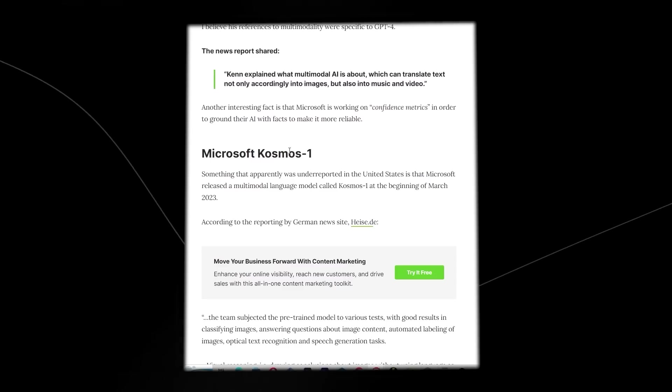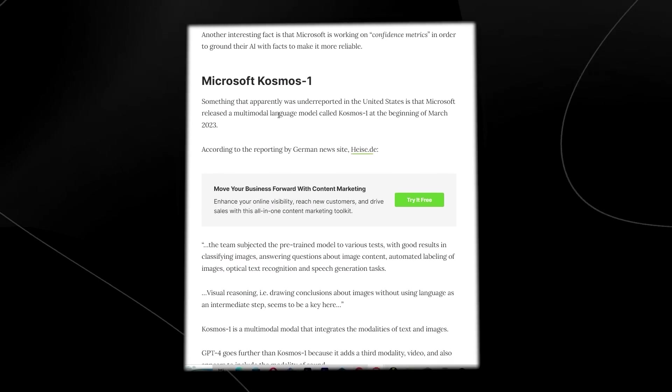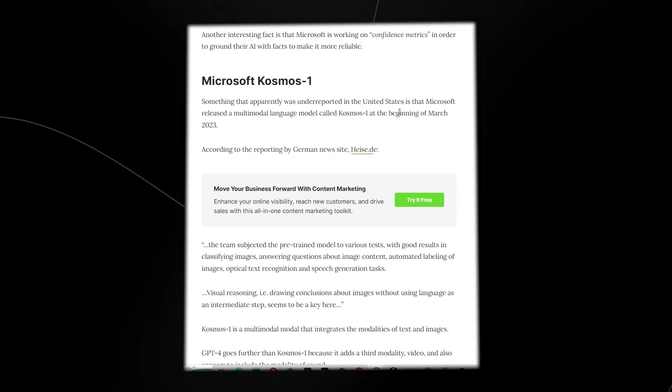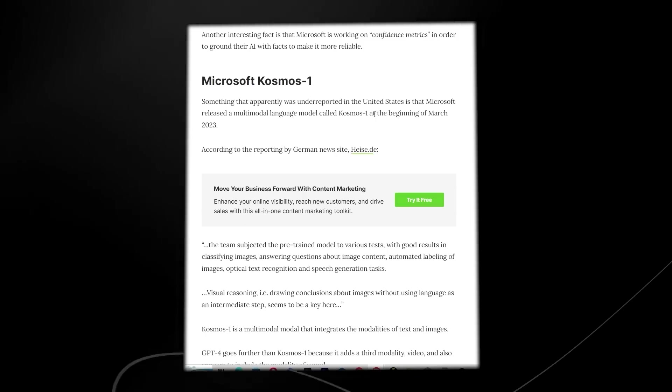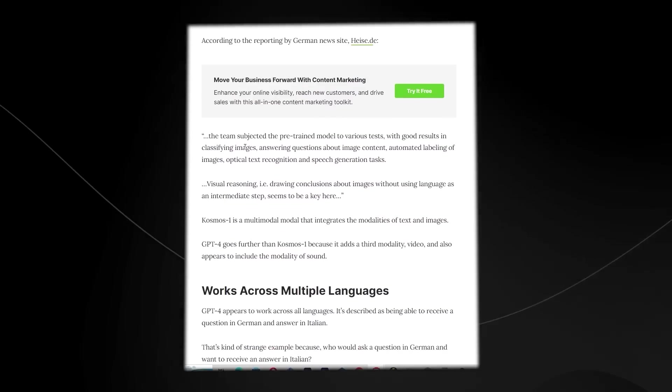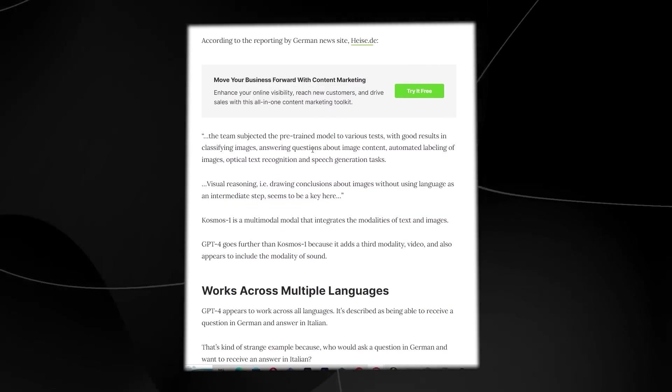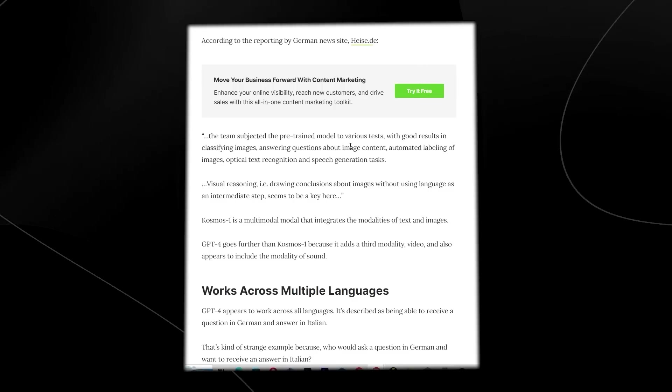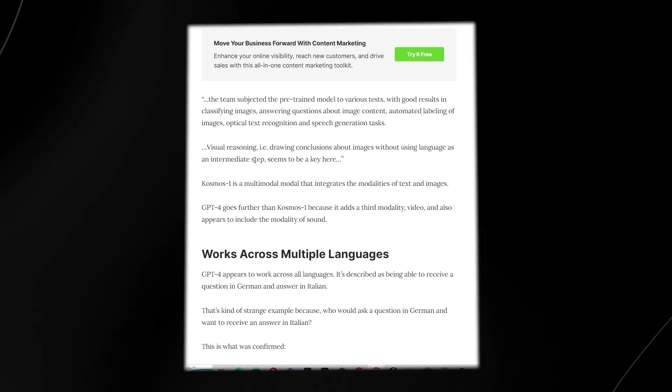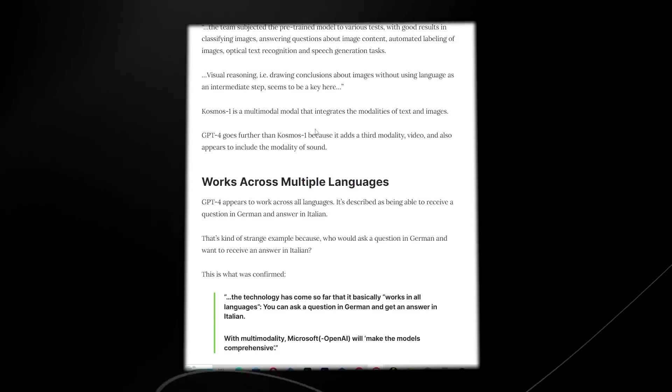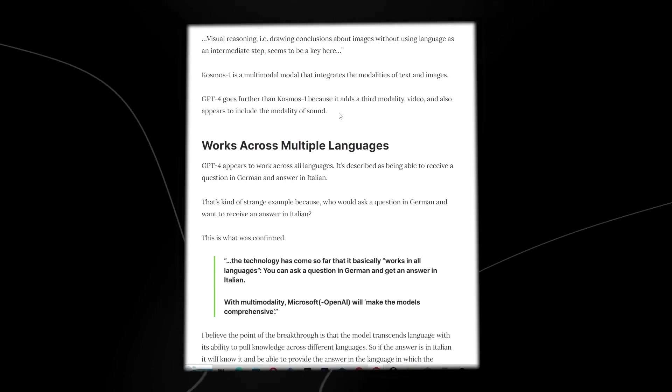Something that is also very interesting is Microsoft's Cosmos 1. It says something that apparently was underreported in the United States is that Microsoft released a multi-modal language model called Cosmos 1 at the beginning of March 2023. So apparently they subjected the pre-trained model to various tests with good results in classifying images, answering questions about image content, automated labeling of images, optical text resolution, and speech generation tasks. Visual reasoning, for example, drawing conclusions about images without using language as an intermediate step seems to be key here.